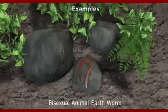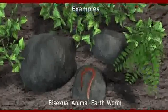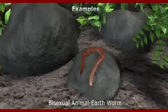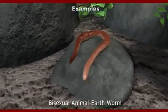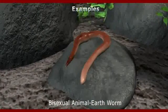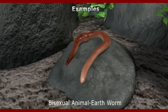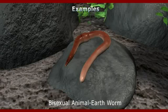Let's see some examples of bisexual animals. Earthworm is a bisexual animal — male and female organs are present in the same individual.